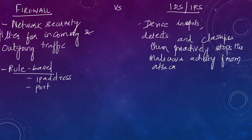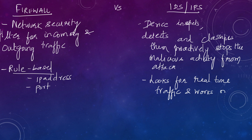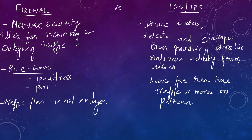IDS/IPS is more on a live mechanism. It looks for real-time traffic and works on a pattern - either a signature pattern or the normal traffic pattern followed in the organization. If there is an irregular pattern or irregular activity, it creates an alert or stops that malicious activity. So firewall works on a specific predefined set of rules and traffic flow is not analyzed, whereas with IDS/IPS the traffic is being analyzed and if there is a deviation from normal activity, it creates an alert.